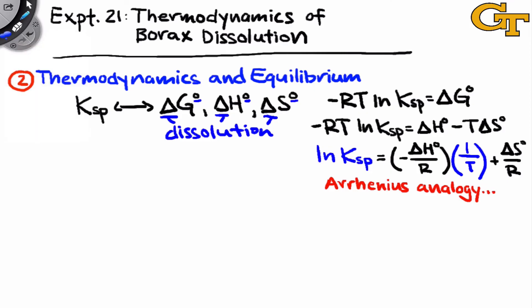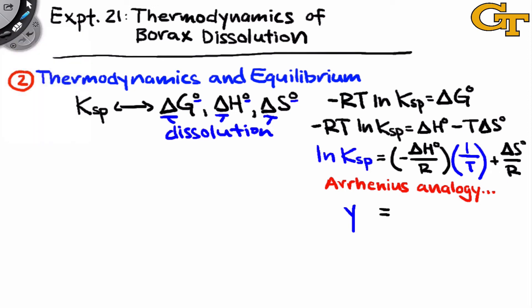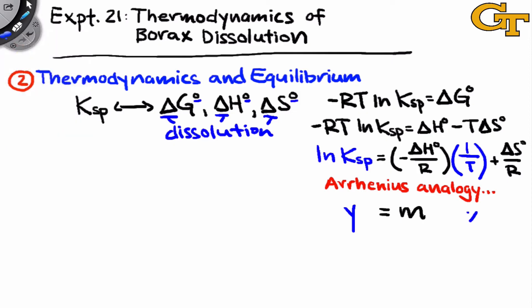There's an analogy here to the Arrhenius equation, and in particular, if we think of the natural log of Ksp as Y and 1 over T as X, we see that those two quantities appear to have a linear relationship in this equation.